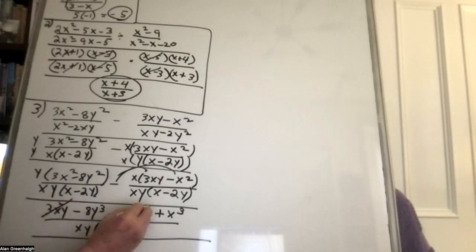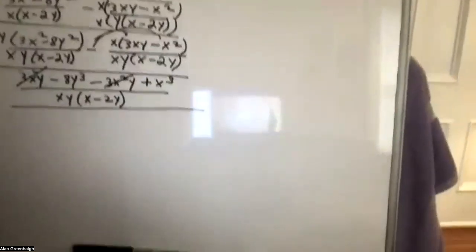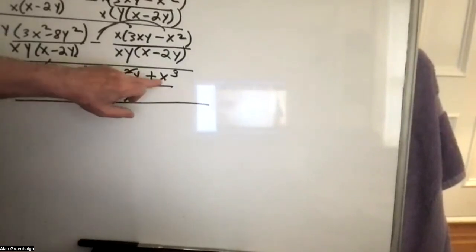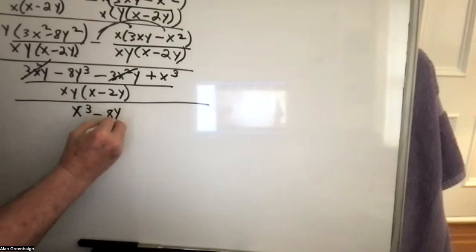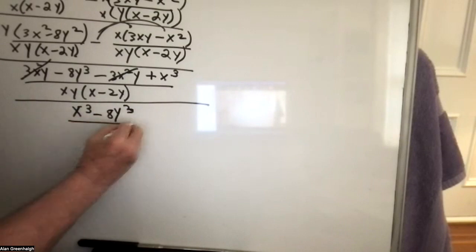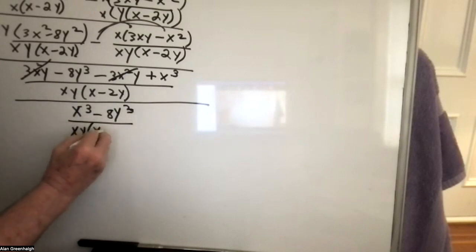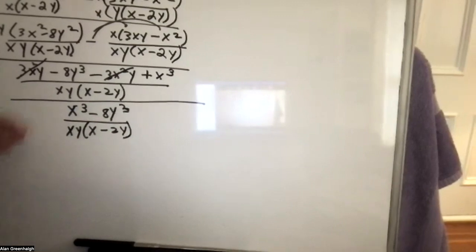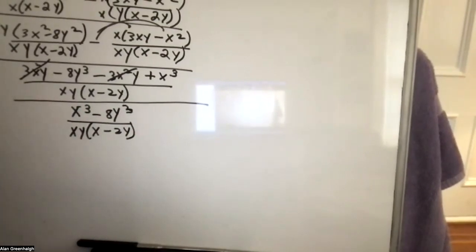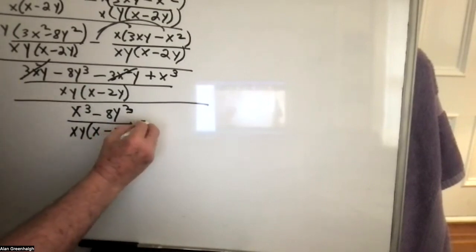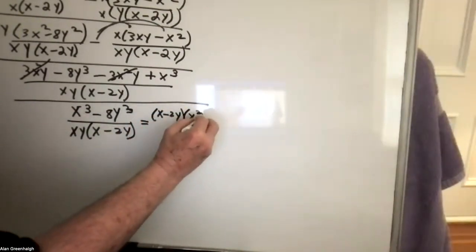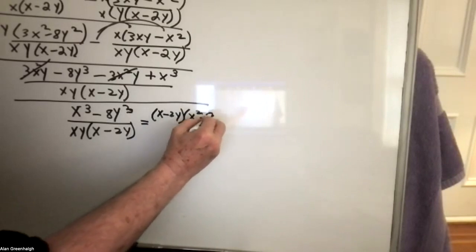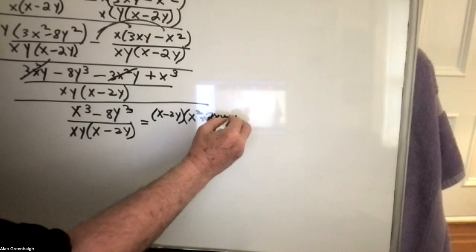This drops out with this — same common terms, like terms drop out. Putting this in front and that next, you get x to the third minus 8y cubed divided by xy times x minus 2y. Many people left it like this, but several people realized this is a difference of two perfect cubes. That could be factored into x minus 2y times x squared plus 2xy plus y squared.